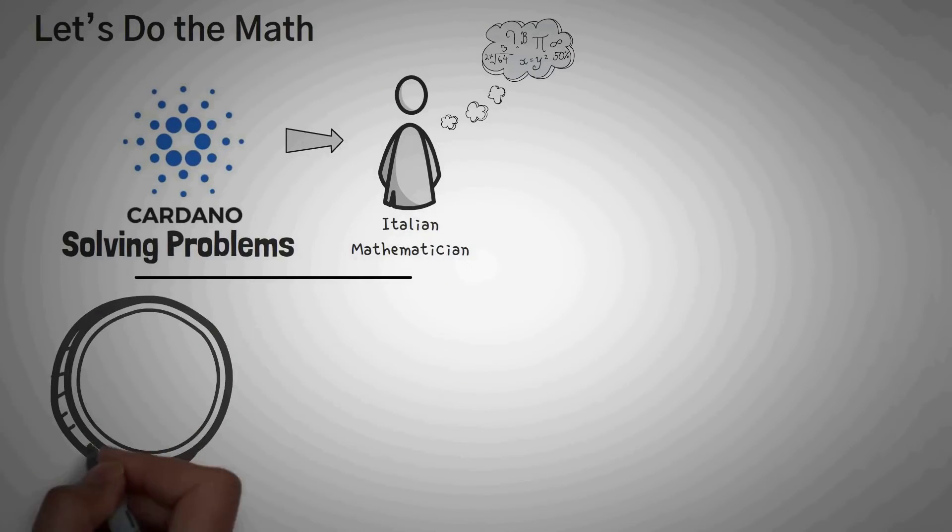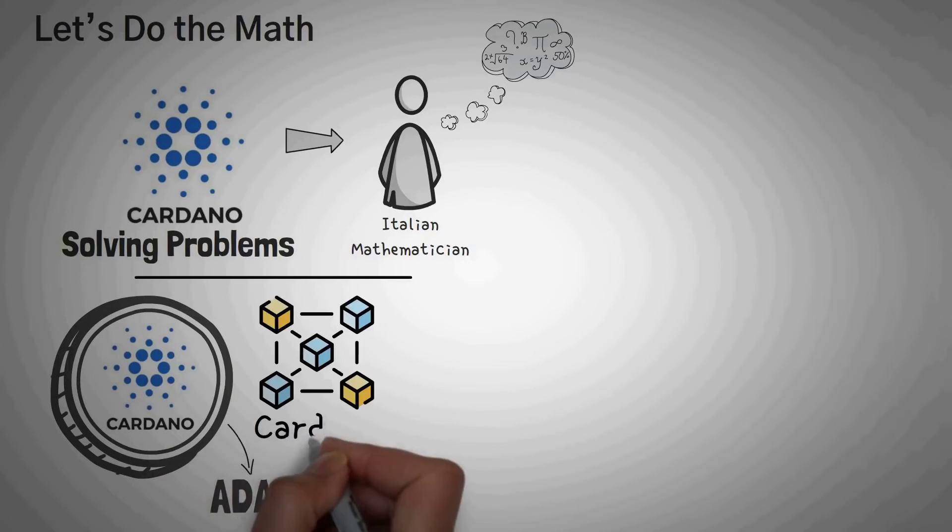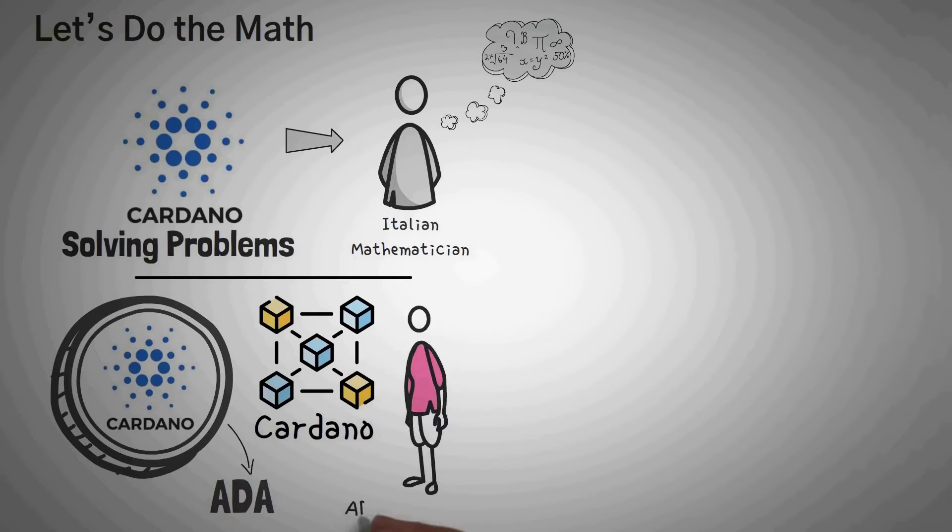The token, which actually carries value and is used on the network, is called ADA. So Cardano is the blockchain, and ADA is the coin. Now, this is not Americans with Disability Acts, but it comes from the name of a woman who is now considered to be the first ever computer programmer, Ada Lovelace.